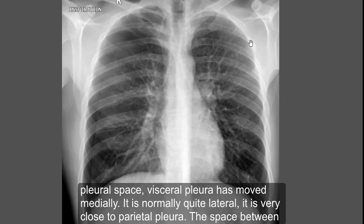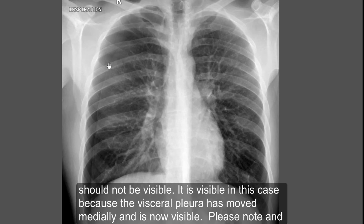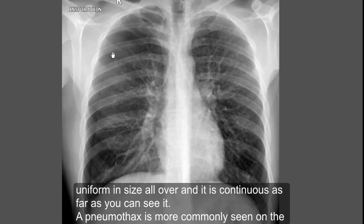The visceral pleura is very close to the parietal pleura, and the space between them should not be visible, as you can see on the left lung. It is visible in this case because the visceral pleura has moved medially. Please note that the visceral pleura is paper thin, uniform in size all over, and it is continuous as far as you can see it.